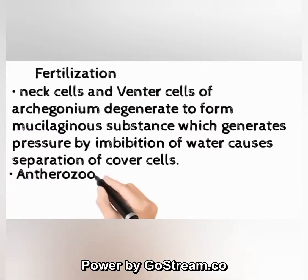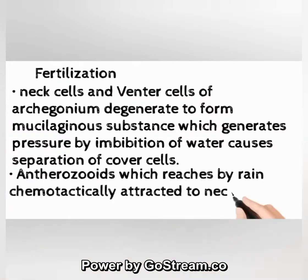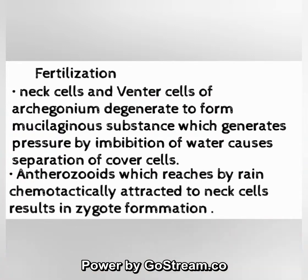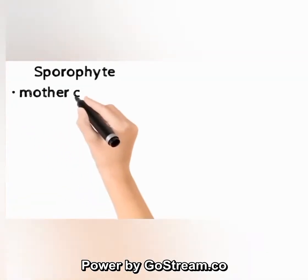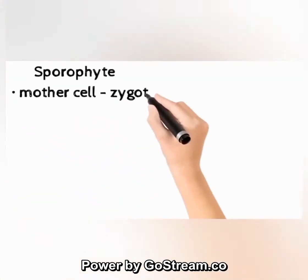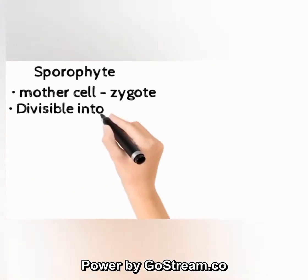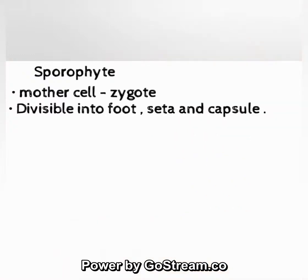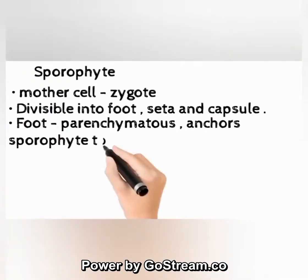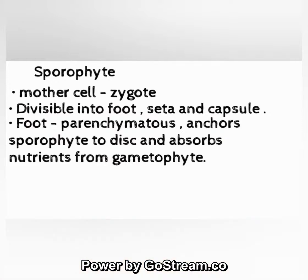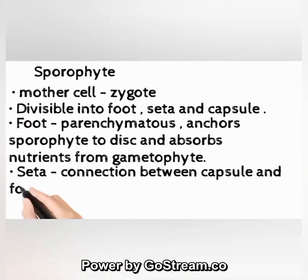Sporophyte — the mother cell (zygote) is divisible into foot, seta, and capsule. The foot is parenchymatous, anchors the sporophyte to the disc, and absorbs nutrients from the gametophyte. The seta is the connection between capsule and foot and helps in the rupture of the capsule outward.